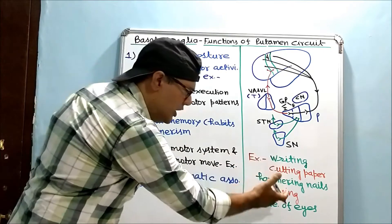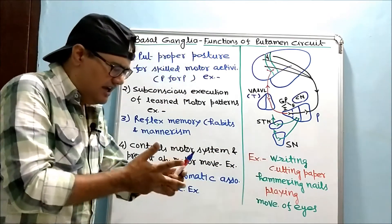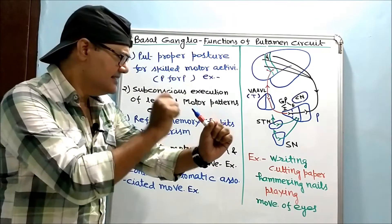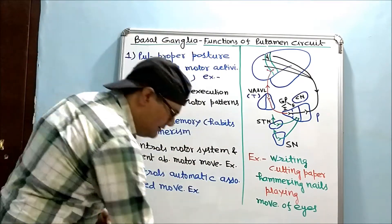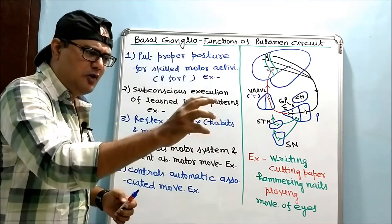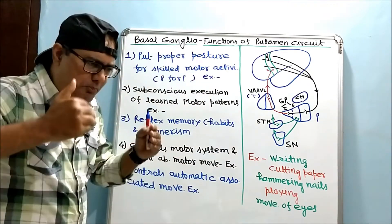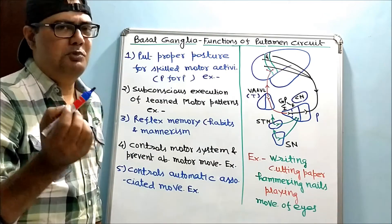That is true for all these complex movements: cutting paper with scissors, hammering nails, playing with ball. This movement is controlled by pyramidal tract, but posture is set by putamen circuit.